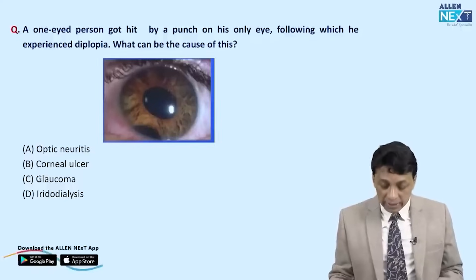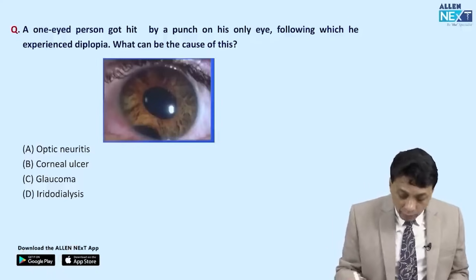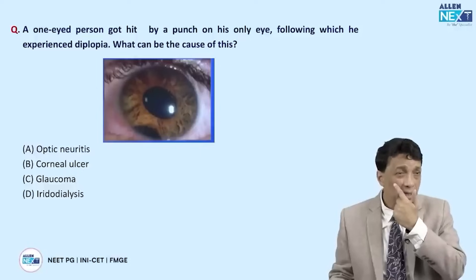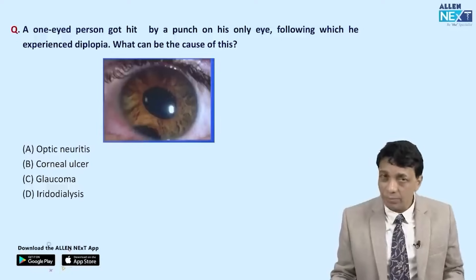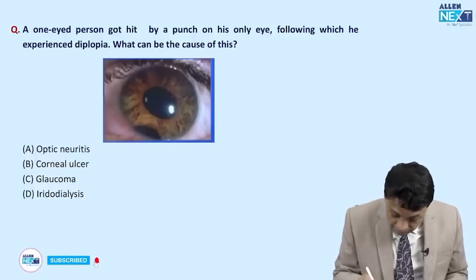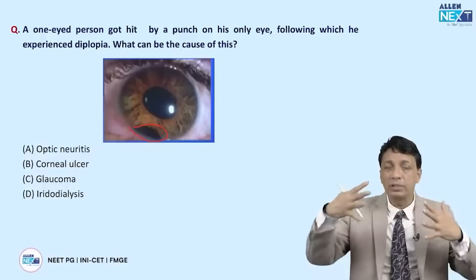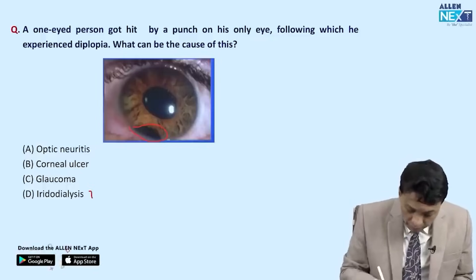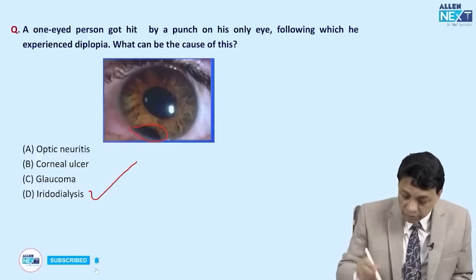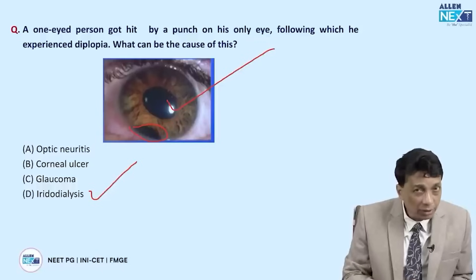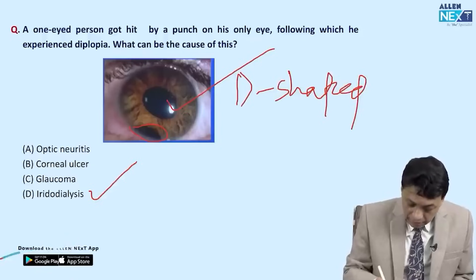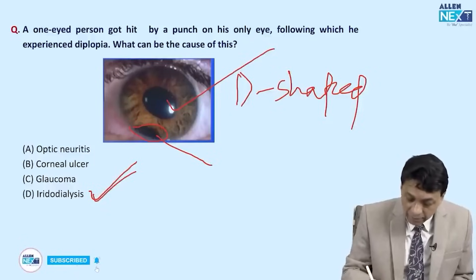A one-eyed person was hit by a punch and subsequently develops diplopia. Since he has only one eye, this cannot be binocular diplopia — it is monocular diplopia. On examination, there is a tearing of the iris away from its insertion to the ciliary body, called iridodialysis. The answer is iridodialysis. The patient experiences monocular diplopia because there are now essentially two pupils — the original pupil and a pseudo-pupil created by the dialysis.